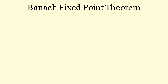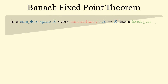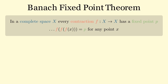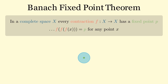What I'd like to do in the rest of this video is state the theorem, break down exactly what it means, and then cover a proof of the theorem in detail. The theorem goes like this: in a complete space X, every contraction from X to X has a fixed point p that you can get by repeatedly applying the function f to any point in the space. Intuitively, you can think of a contraction as some sort of shrinking function on the space X. What this theorem says is that if you keep contracting the space, you will eventually shrink down to a point, and this point will be a fixed point of the contraction function.